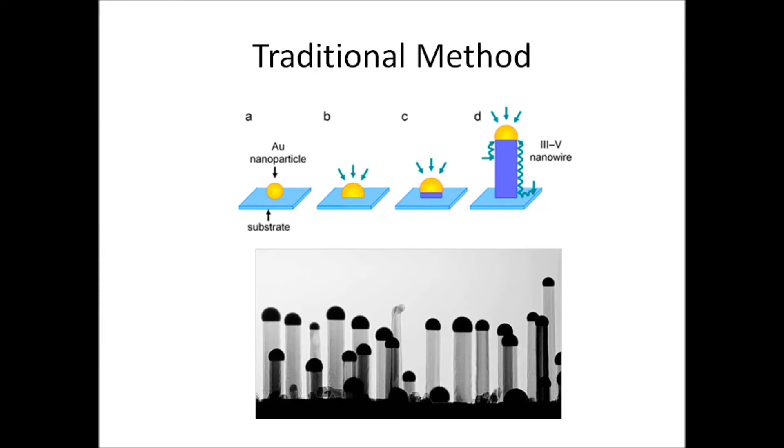Traditionally, nanowires are grown using a gold nanoparticle precursor. The gold attaches to the substrate and the wires grow out from the bottom of the gold because there's less surface energy to overcome where the substrate meets the gold than anywhere else. This creates very nice, uniform wires, but there's a problem.